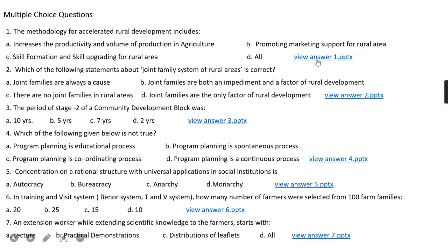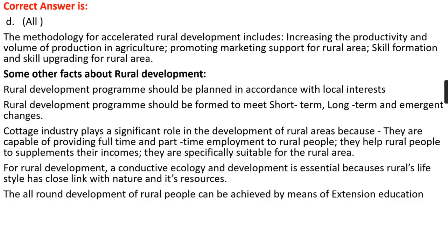The right answer is option D, that is all. The methodology for accelerated rural development includes all: increasing the productivity and volume of productions in agriculture, as well as promoting marketing support for rural area, and also focusing on skill formation and skill upgrading for rural area. Let's see some other facts about rural development.